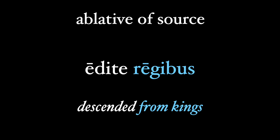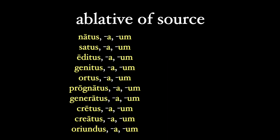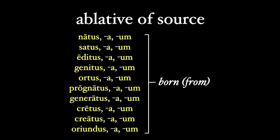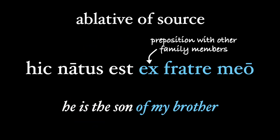You'll notice that each of these ablatives of source follows a participle, like natus, rather than a regular verb. Here's a list of the common participles and their meanings that take an ablative of source without a preposition: natus, satus, editus, genitus, ortus, prognatus, generatus, cretus, creatus, oriundus. And sometimes we see a preposition used, especially with family members other than a father or mother, and sometimes even with the mother.